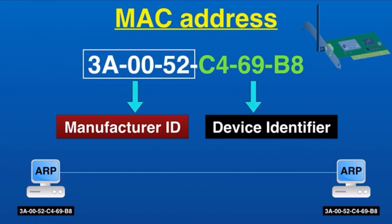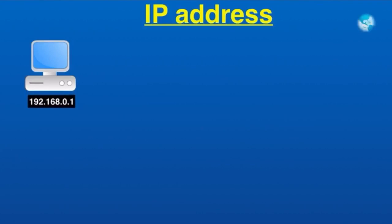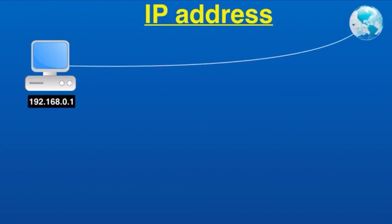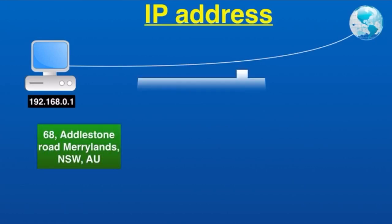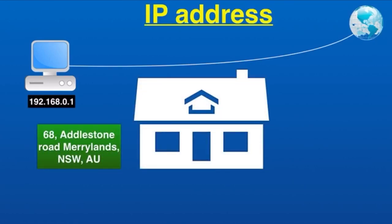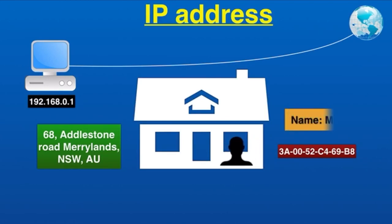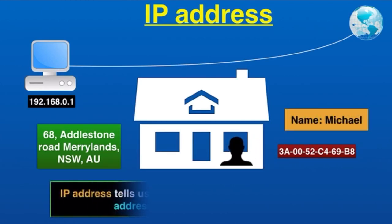Now let's get into the details of IP address. IP address is a unique identifier given to a device connected to the network. As mentioned earlier, IP address is used to locate a device on the internet. It's like a home address that tells us where the home is located, but it doesn't tell us who lives in the home — that's what a MAC address tells us.